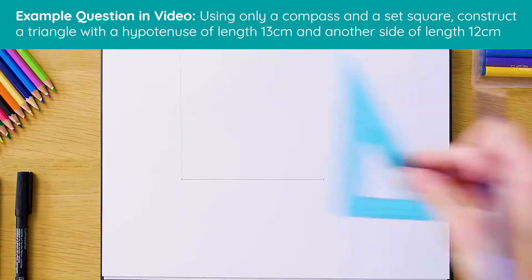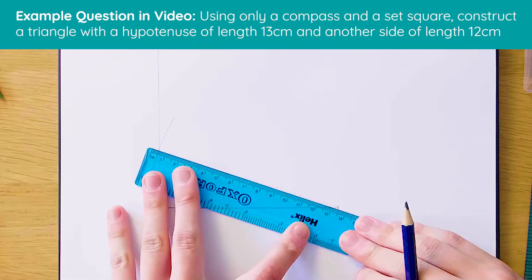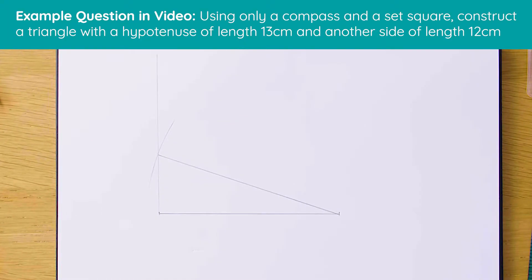Okay so this is what our triangle is going to look like once we're finished. As you can see we've got our hypotenuse of length 13 centimeters and our horizontal line of length 12 and our right angle there beside it. So let's see how this is done from scratch.